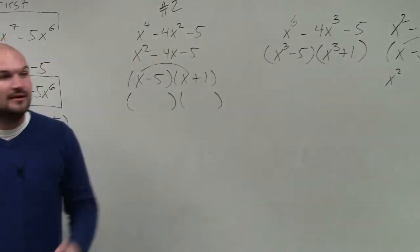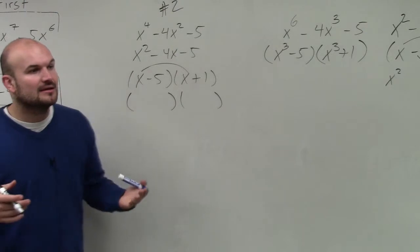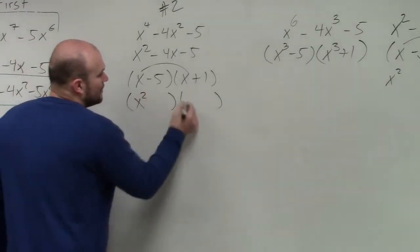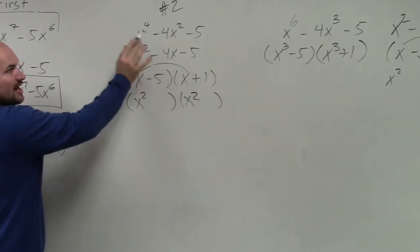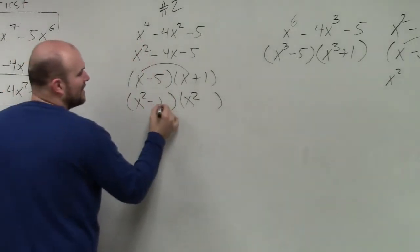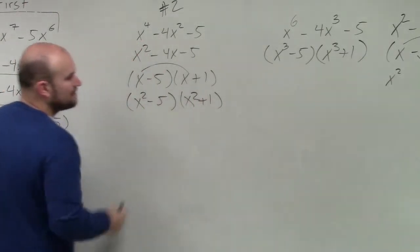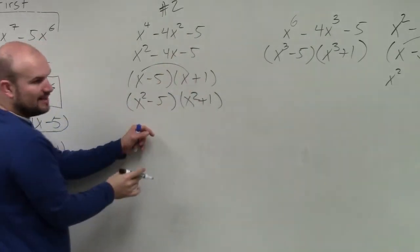Anybody want to raise their hand and give it a shot? Yes. x squared. x squared times x squared is x to the 4th. And then minus 5, and then plus 1. Negative 5 times 1 is still going to give me that, right?